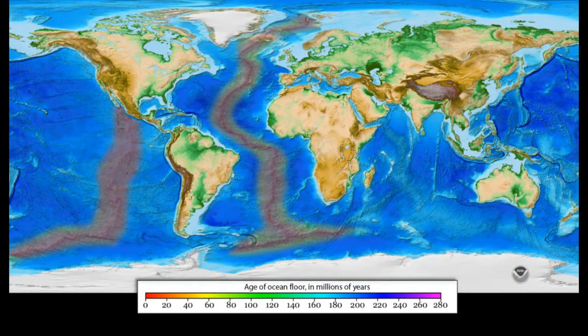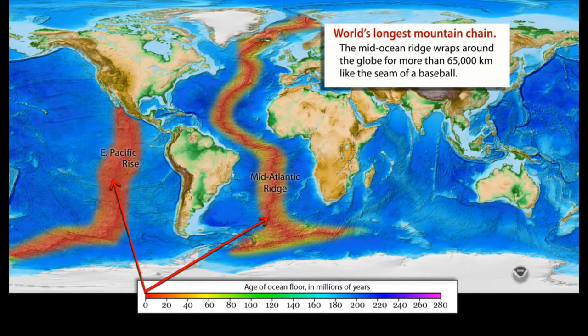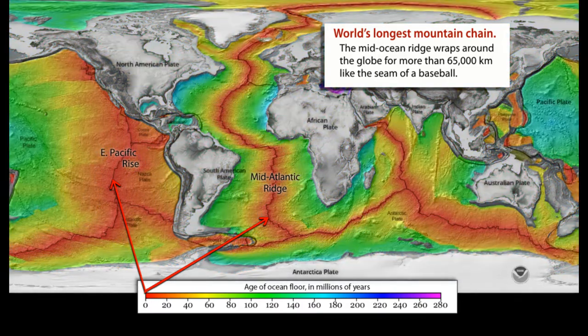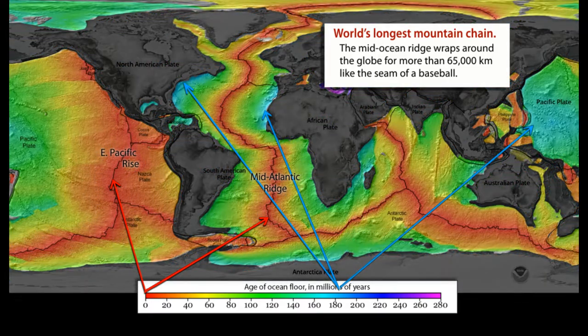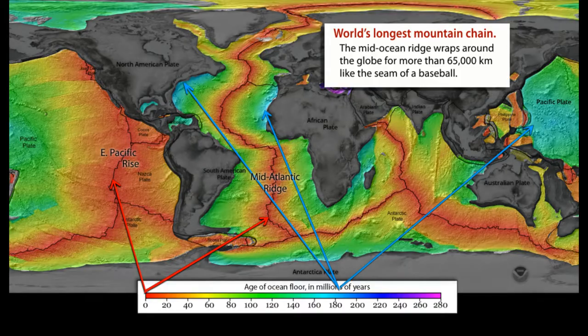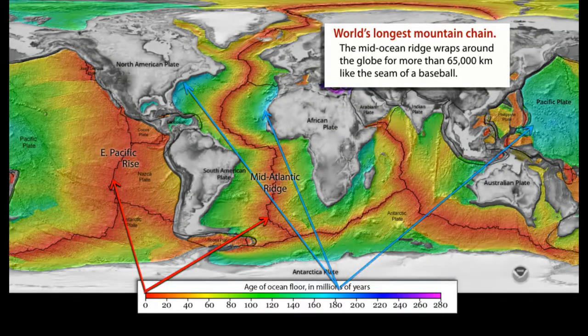Now let's look at the broader picture. This map shows how the seafloor increases in age with distance away from spreading ridges such as the East Pacific Rise or the Mid-Atlantic Ridge, where a new ocean plate is forming.